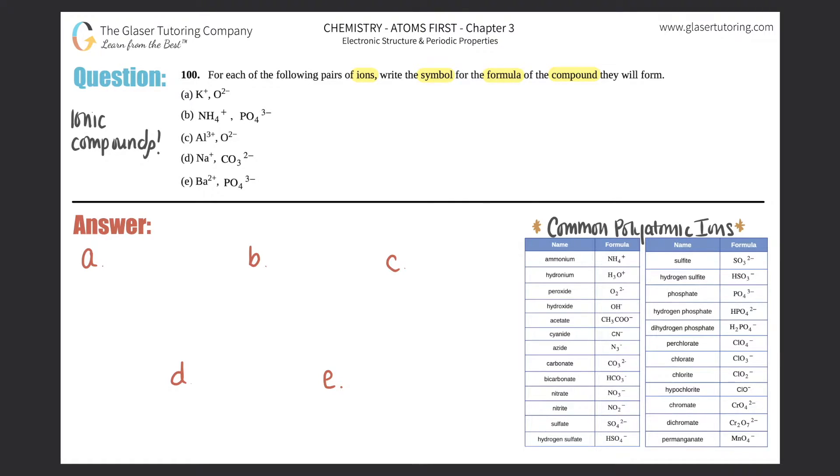Always know that ionic compounds will be formed with one ion being the positive - they lost electrons - and the other ion is the negative. There will never be two positives coming together and there will never be two negatives coming together. Majority of the time, ionic compounds are usually metal plus a non-metal.